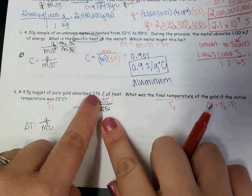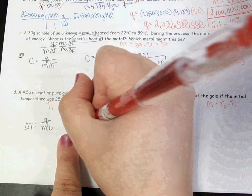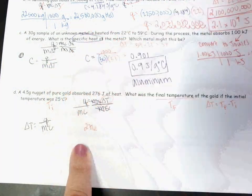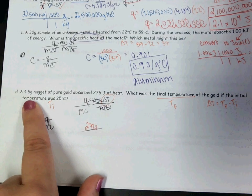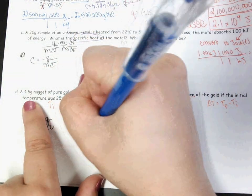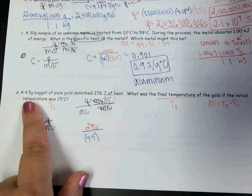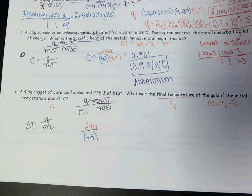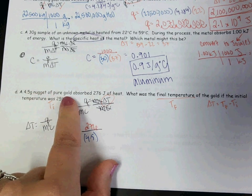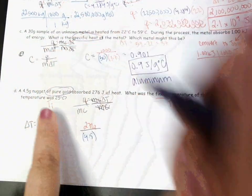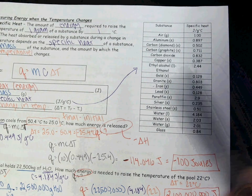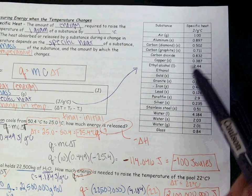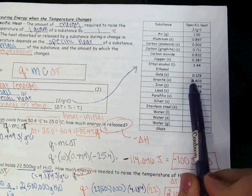My Q value is 276 joules, so I'll plug that in. My M is 4.5. And my C value — C stands for specific heat. Because I have a substance, I'm able to look up pure gold in my specific heat chart. Gold as a solid — it says it's a pure gold nugget, so I would assume it's a solid. So that's 0.129 joules per gram degree Celsius.